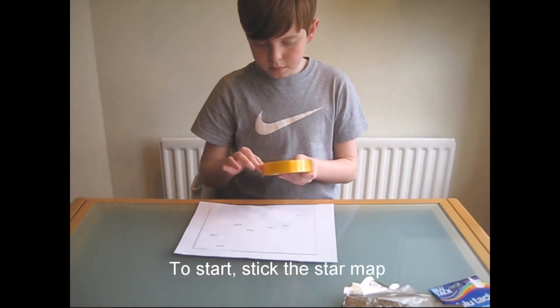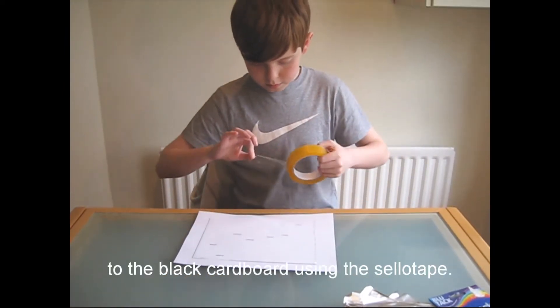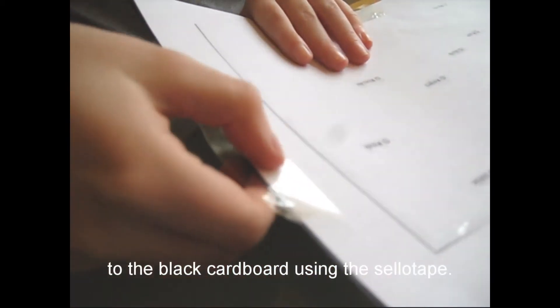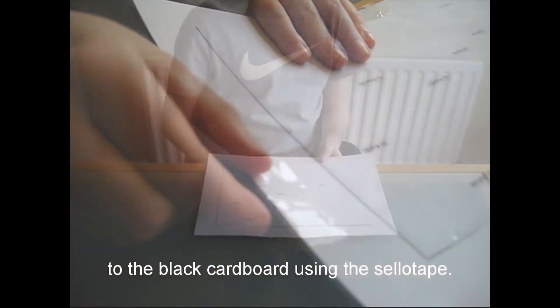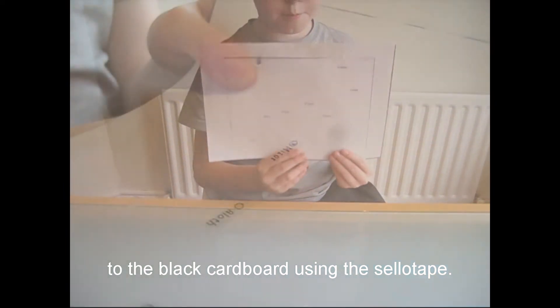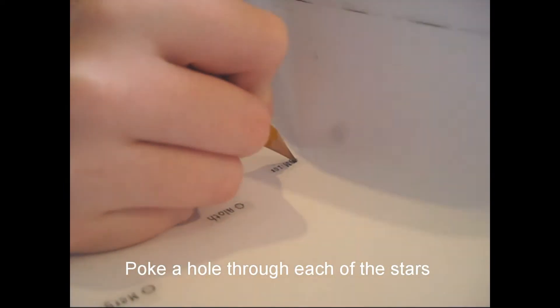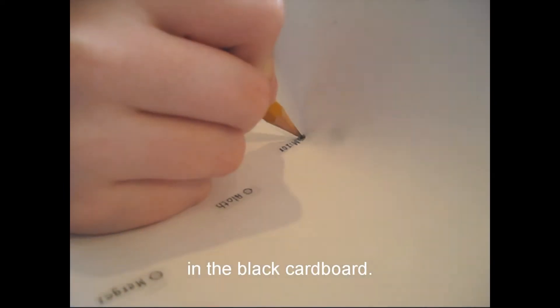To start, stick the star map to the black cardboard using the sellotape. Poke a hole through each of the stars in the map so that there's a hole in the black cardboard.